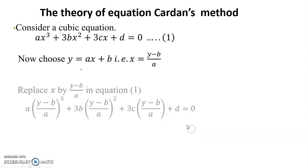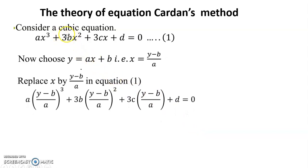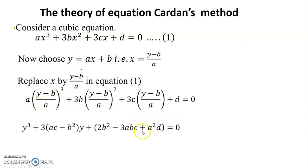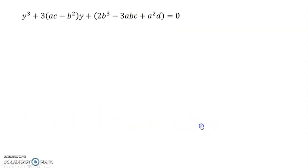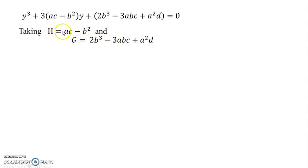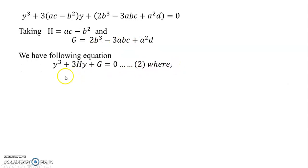The goal of this substitution is to vanish the 3b term — the middle term. After substituting and simplifying, we obtain a reduced cubic equation: y³ + 3hy + g = 0, where the squared term has been eliminated.